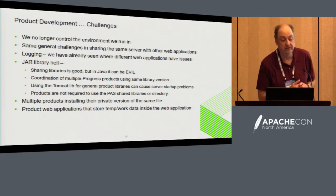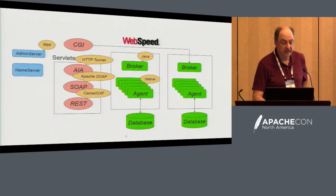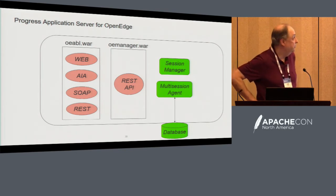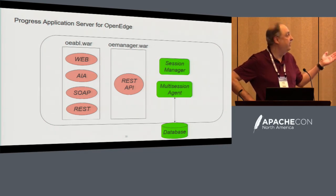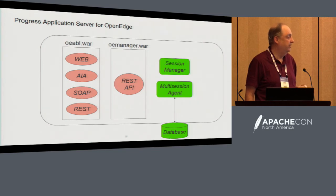Applications that store their temp work data inside the web application is a problem for us. What we delivered with Tomcat is a single application server — we moved all our servlets inside our OEABL.war. Our transports — web, AIA, SOAP, and REST — are all in there. Our OE Manager War provides our REST API. The broker process we had in our classic application server is now a lightweight session manager because we no longer have to manage connections — Tomcat does that for us. And we replaced our single agent process with a multi-session agent that can support multiple ABL sessions in a single OS process.